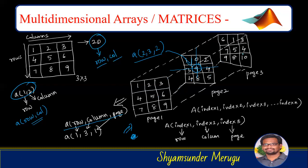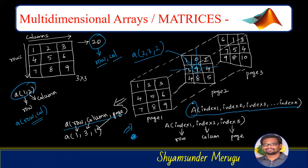Since MATLAB is a case-sensitive programming language, capital A and small a are different variables. In the case of a three-dimensional array, we write a(index1, index2, index3), where the first index is the row, the second is the column, and the third is the page.